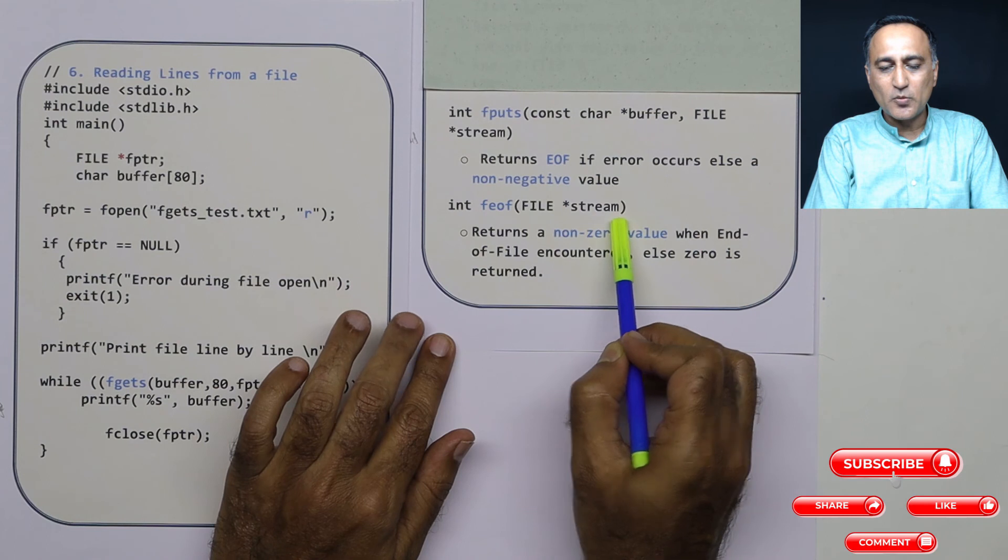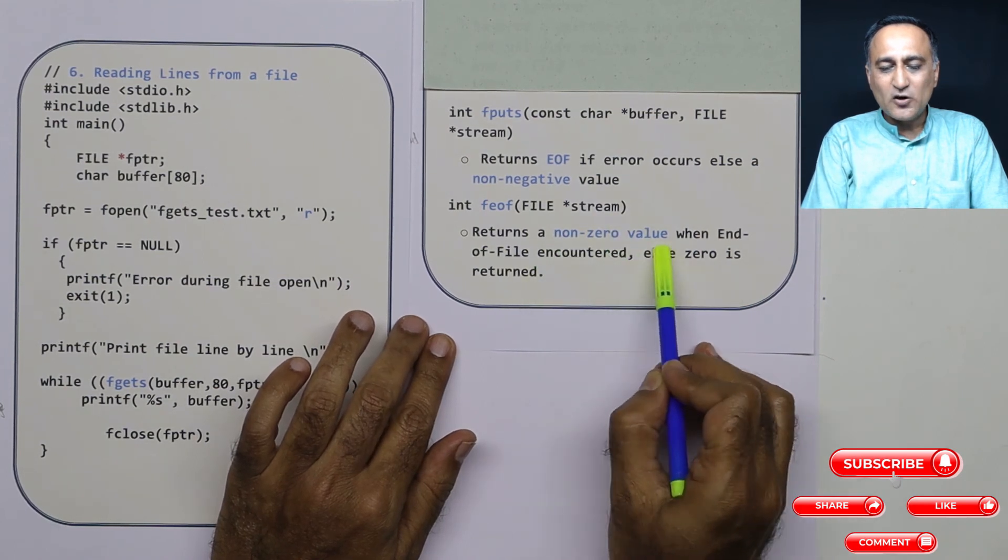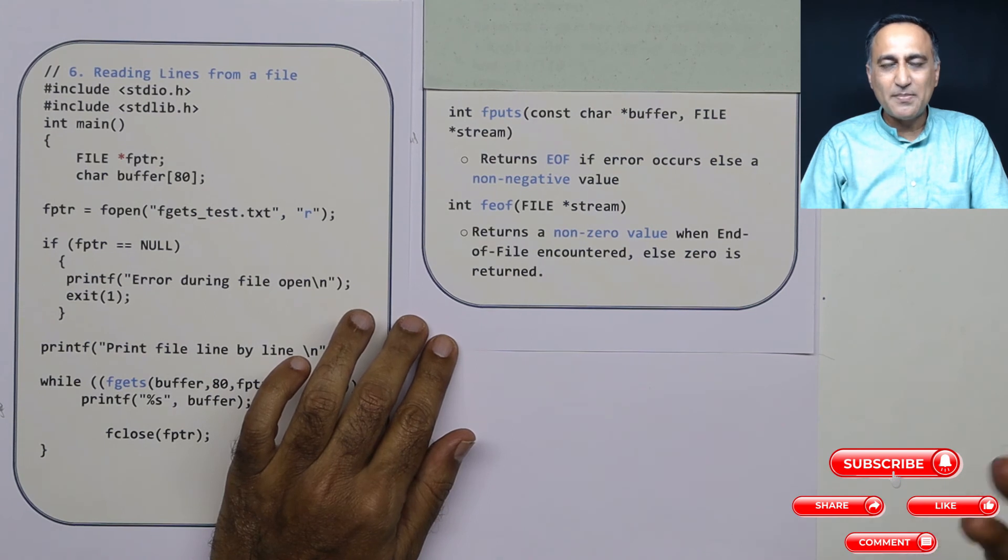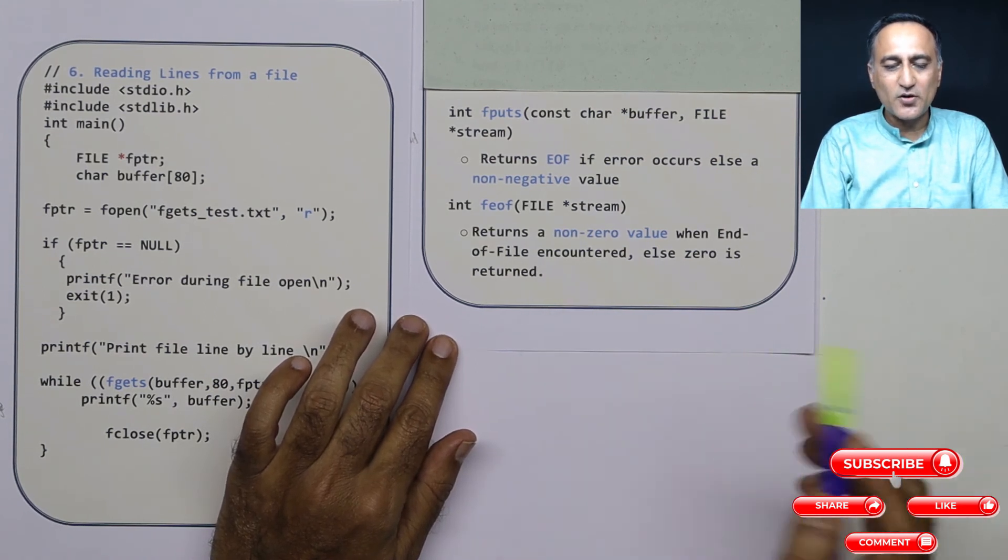Stream stands for the source of input or output. So it returns a non-zero value when the end of file is encountered, generally minus one. Otherwise, zero is kept on returning.